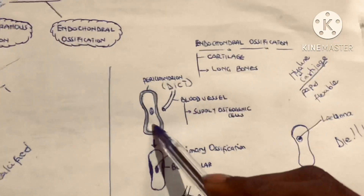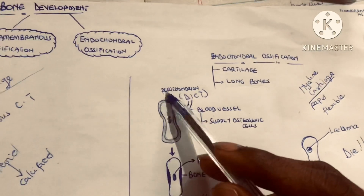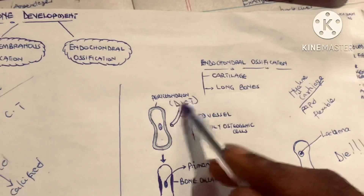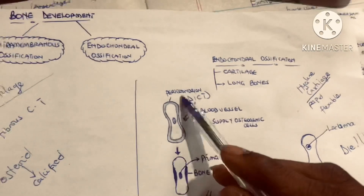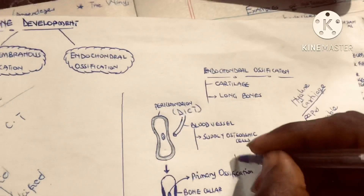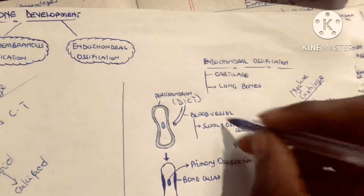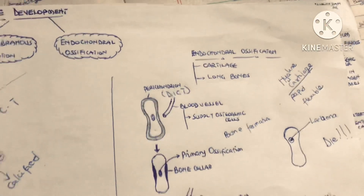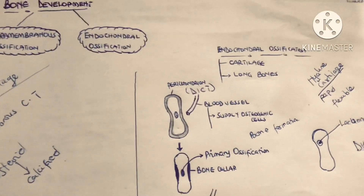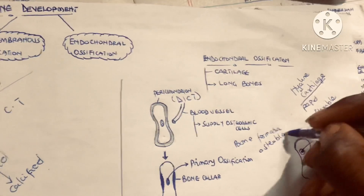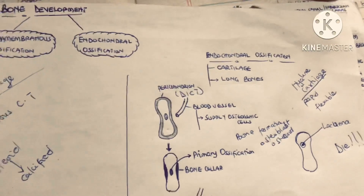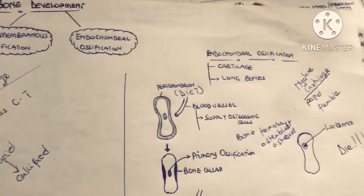There is a hyaline cartilage surrounded by a structure called the perichondrium, which is made of dense irregular connective tissue. The perichondrium is supplied with nutrients by blood vessels. During bone formation, these blood vessels supply the perichondrium with osteogenic cells — the stem cells for bone. These differentiate into osteoblasts, which secrete osteoid, which becomes calcified, and the osteoblasts then differentiate into osteocytes that maintain the bone matrix.